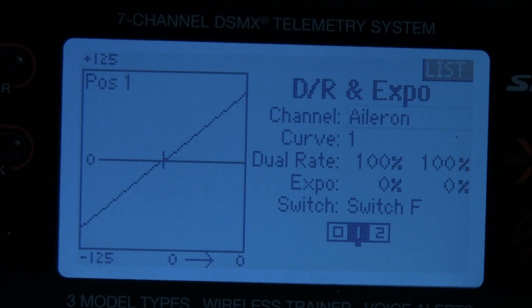Select a channel. In this case, aileron is already selected for us and that's what we want. We want to select the switch. In this case, I want to go to switch F.